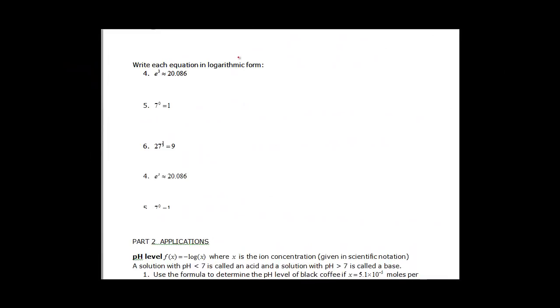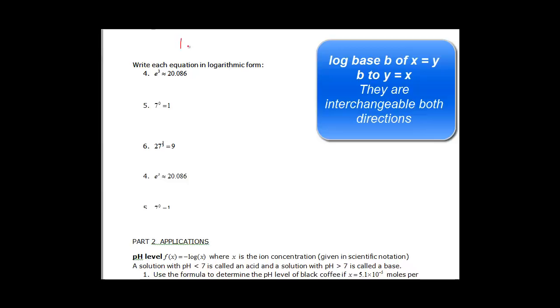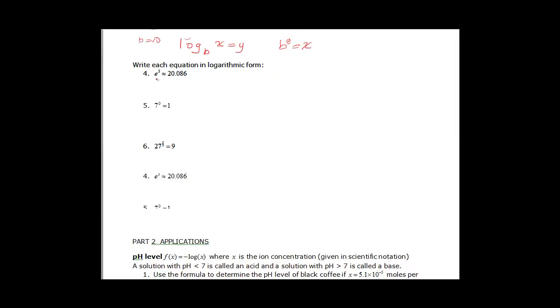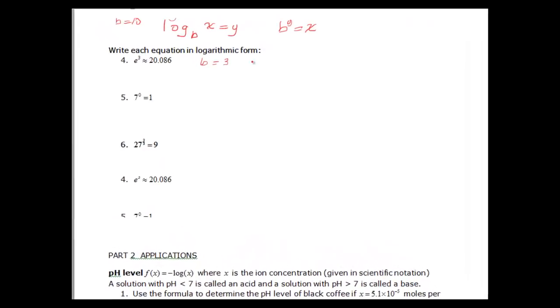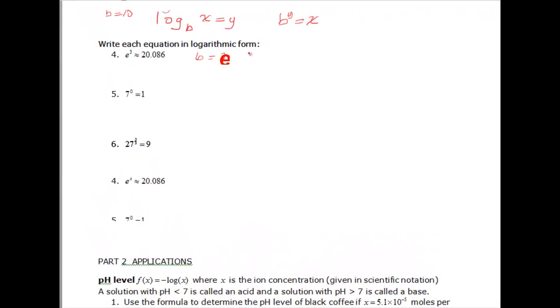And look at we want to go the other direction. Write each equation as a logarithmic function. Well if you go back, it said log base b of x was equal to y, and then it was also b to the y is equal to x. So we just need to figure out what's y and what's x. Base is hopefully obvious. Here b should be e. And we have our y which is our exponent. So y equal 3. And then x is going to be that 20.086.